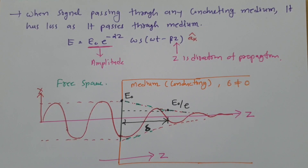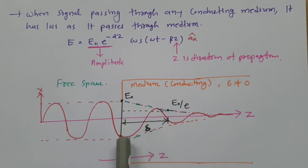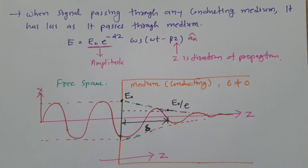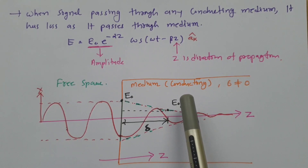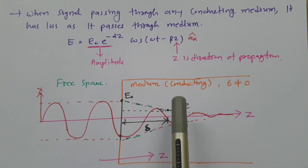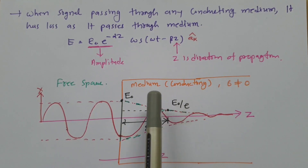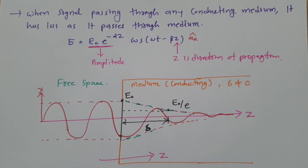As the electric field goes inside the conducting medium, there is higher strength on the skin and the strength decreases as it goes inside. Skin depth explains the magnitude of the electric field reaching 1/e times its initial magnitude, and at that position, whatever depth is there, that is referred to as skin depth.